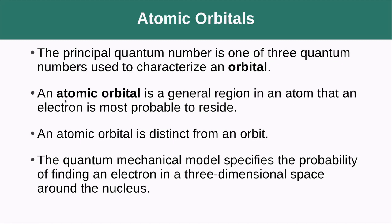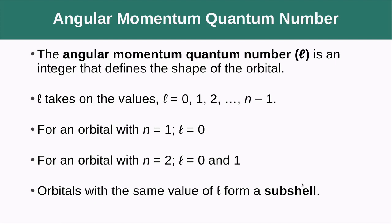The principal quantum number is one of three quantum numbers characterizing an orbital. An atomic orbital is a general region in an atom where an electron is most probable to reside. An atom's orbital is distinct from an orbit—an orbital is a three-dimensional object with volume, different from an orbit which is just a path. The quantum mechanical model specifies the probability of finding an electron in three-dimensional space.